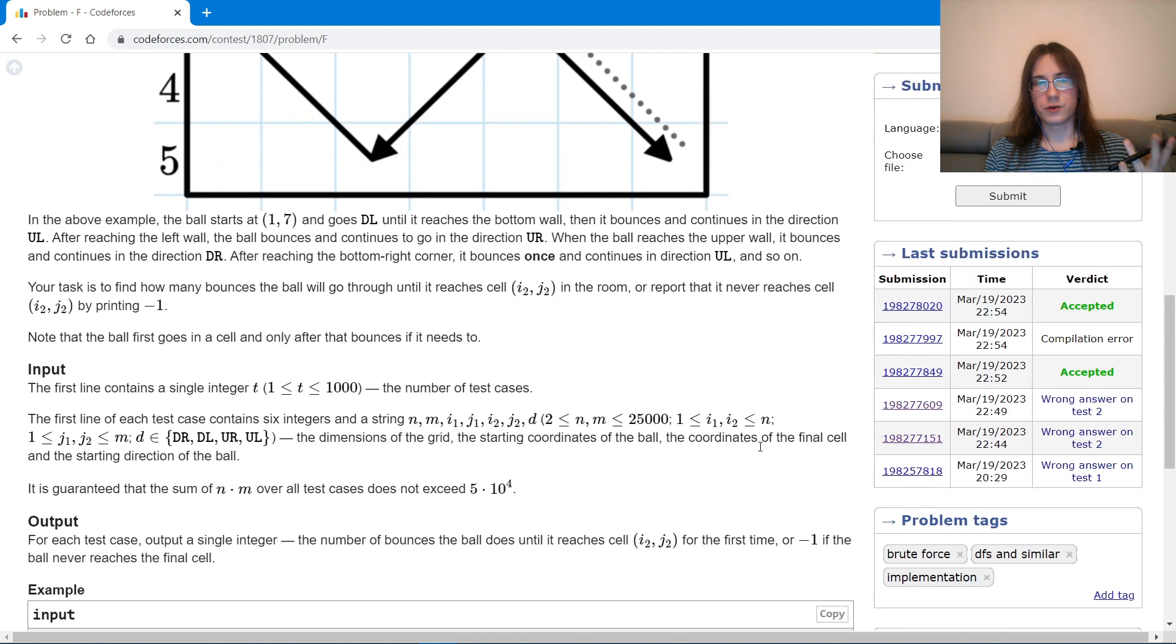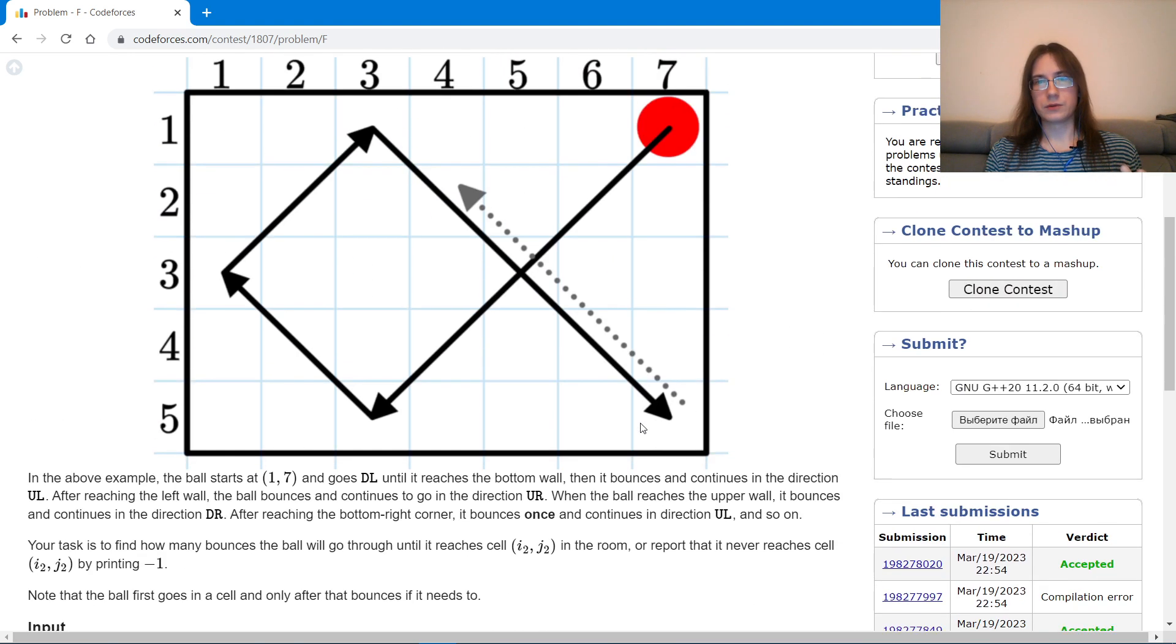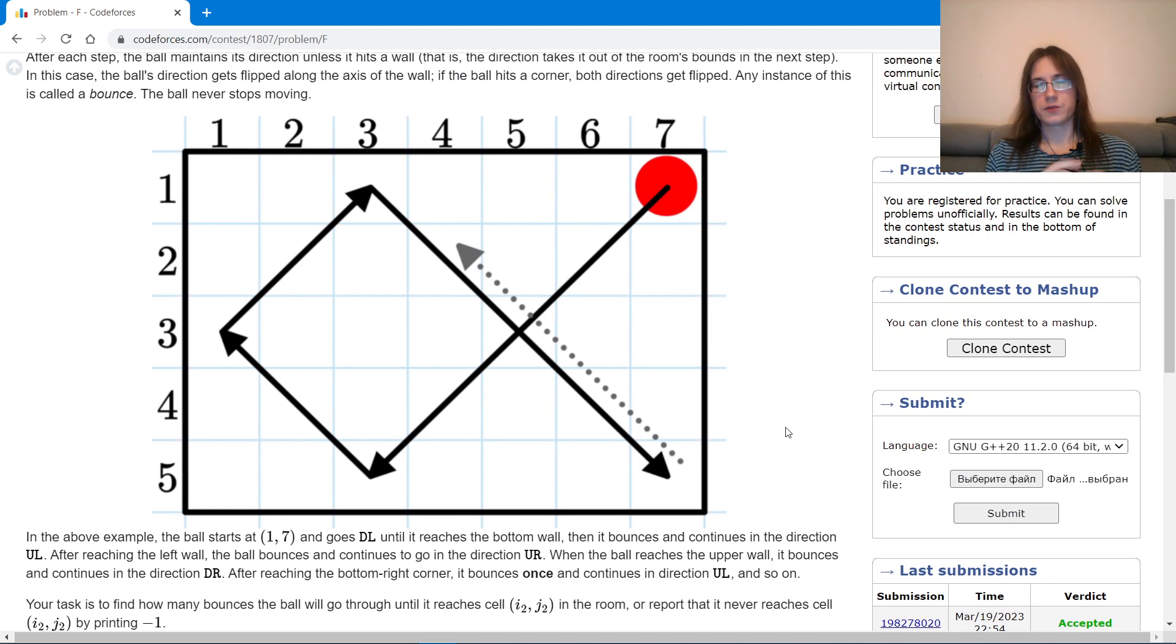But what if the constraints were much larger? What if n and m were up to one billion, for example? Could we still solve such problem? Well, I'll show you how.